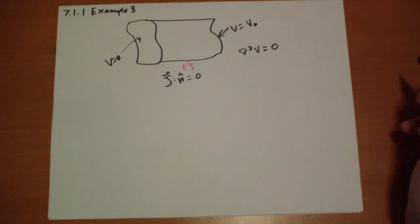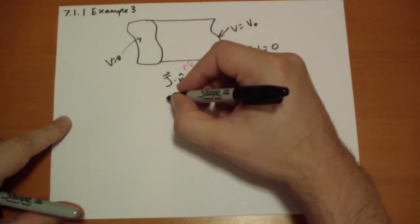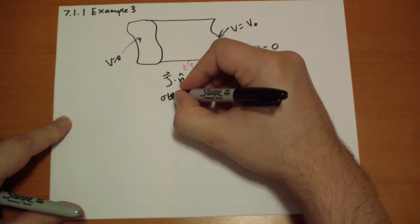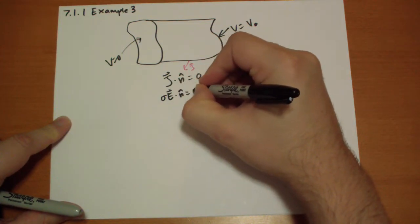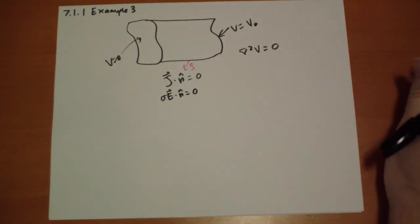Well, you know, j is equal to sigma dot E, so that means that sigma E has to equal zero as well. So the conductivity times electric field.